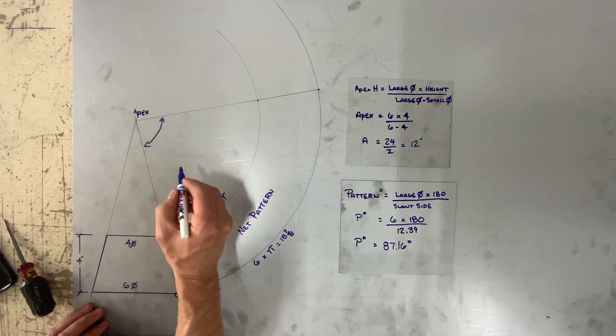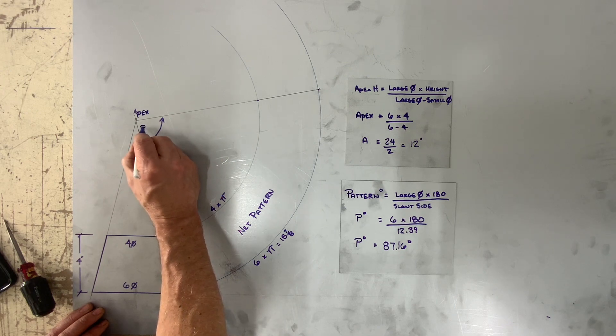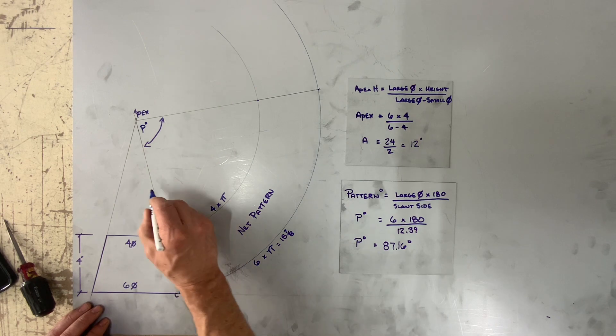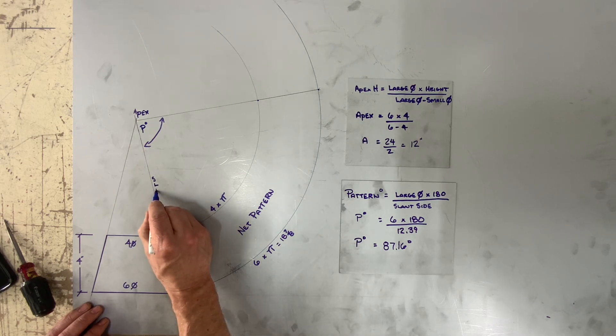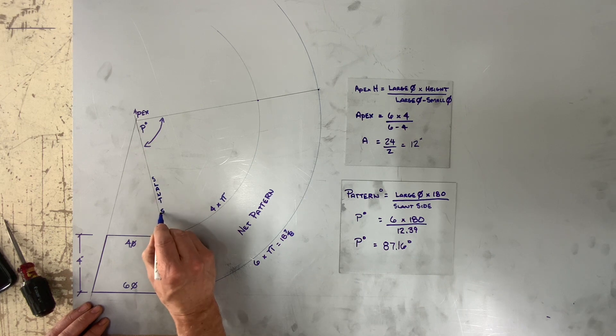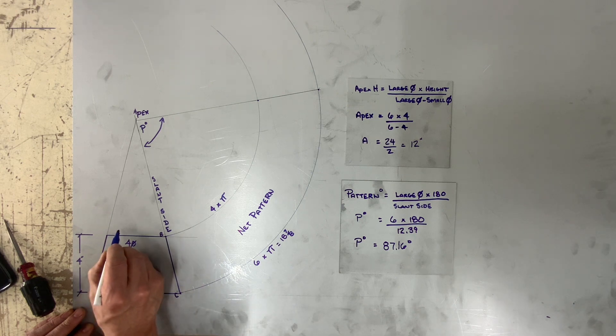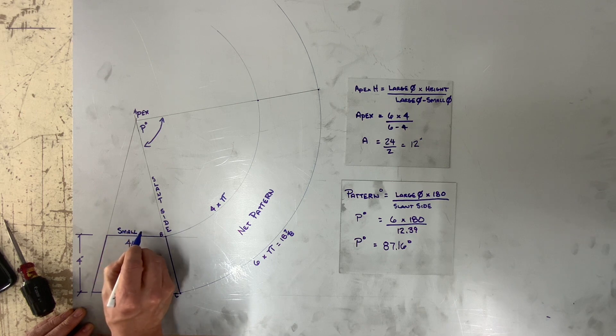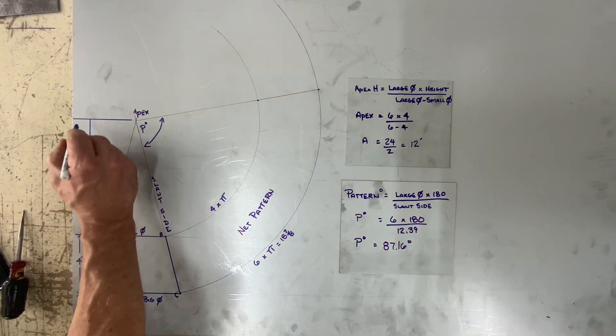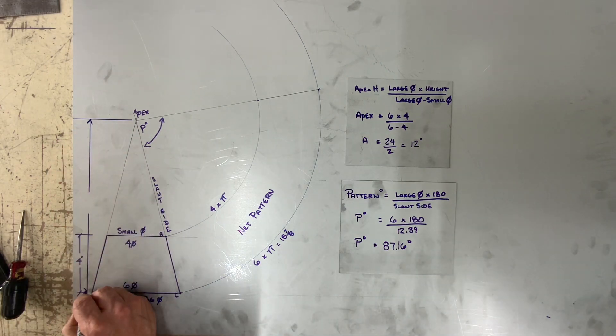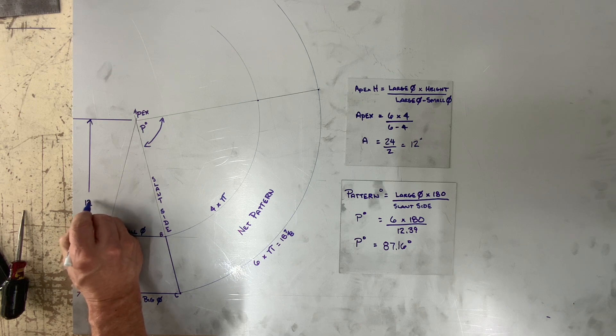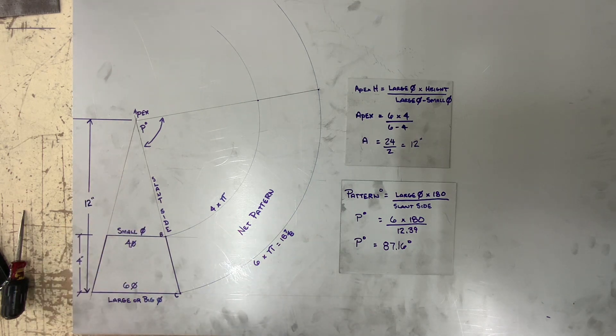Now to review the terms that we have been using: we have apex, there's pattern degree, this is the slant side, the large or the big diameter, small diameter. And then I am going to add the apex height. The apex height is always your vertical height from the base to the apex, and in this case it was twelve.